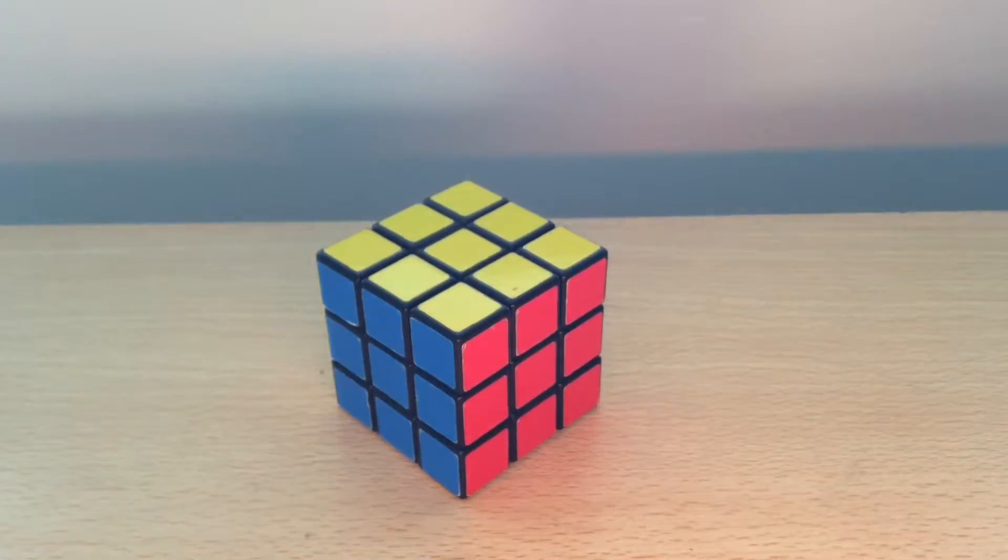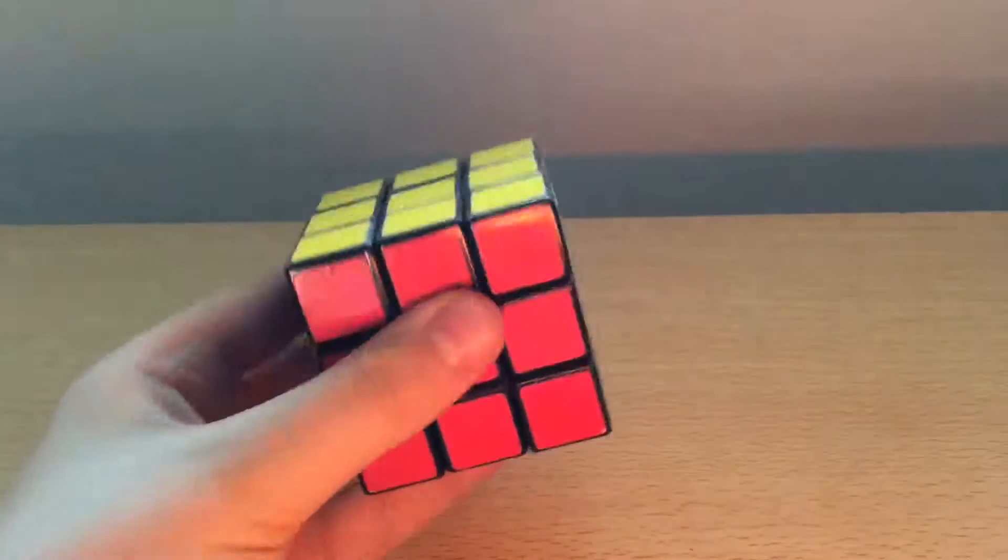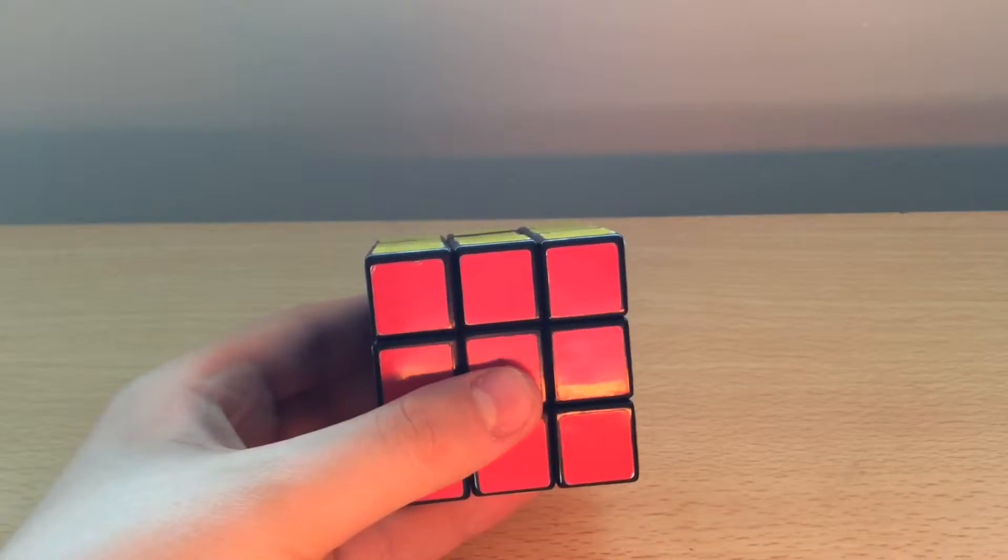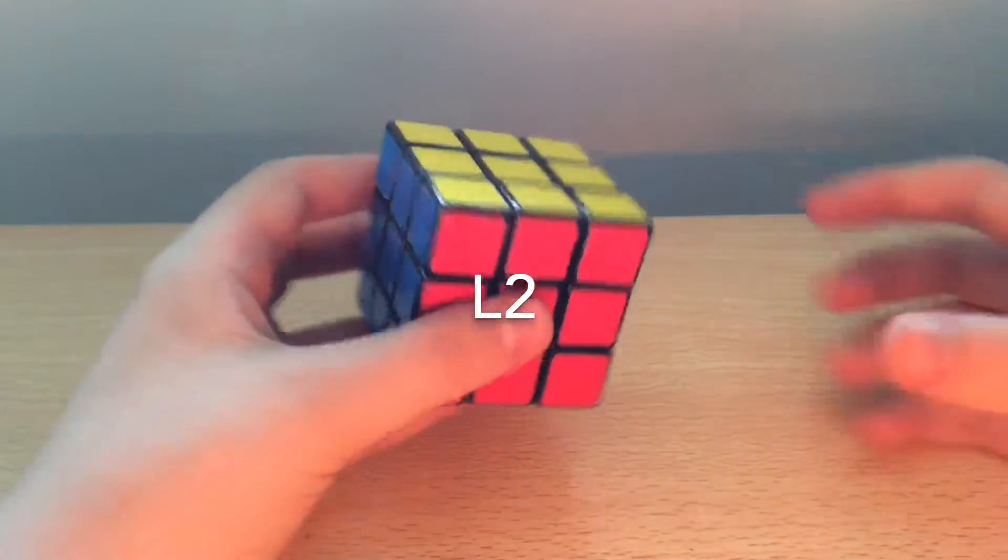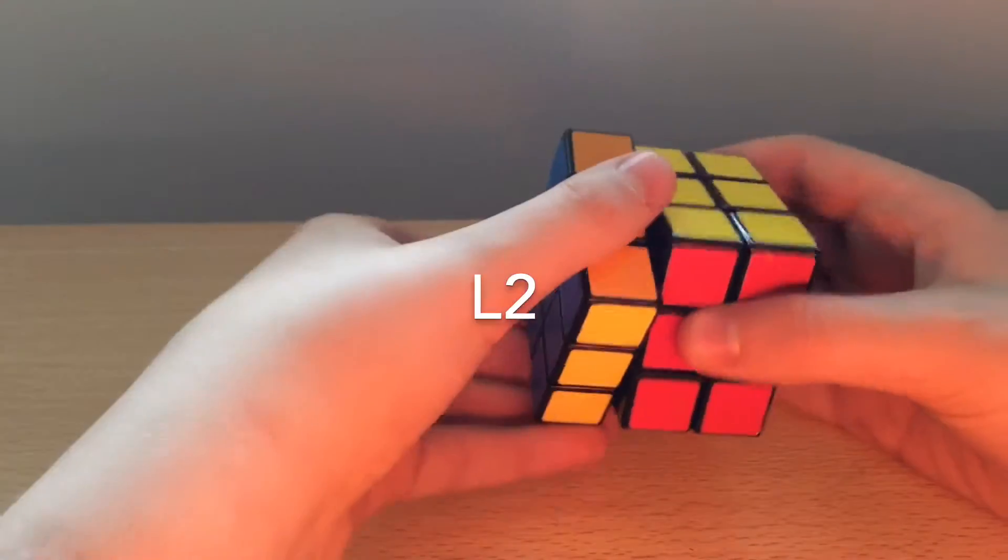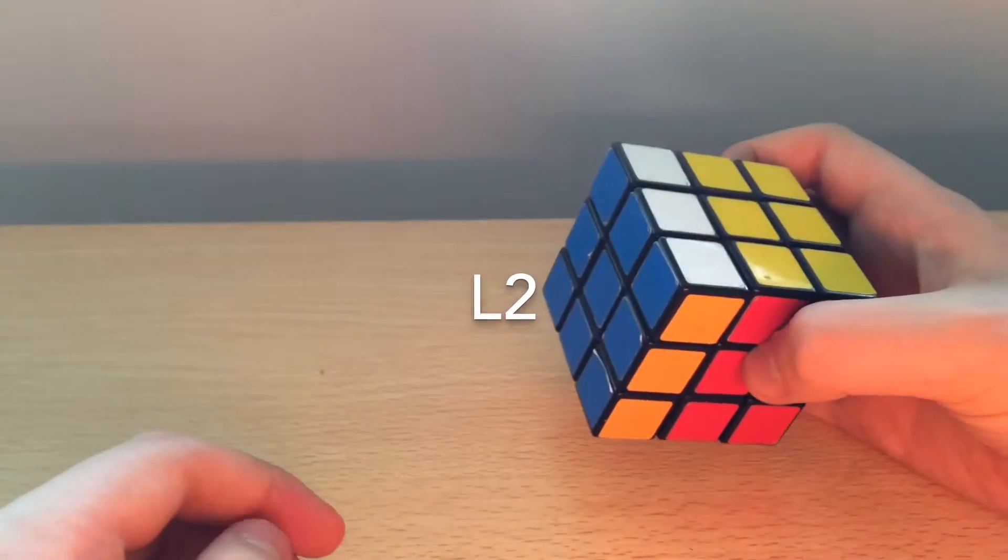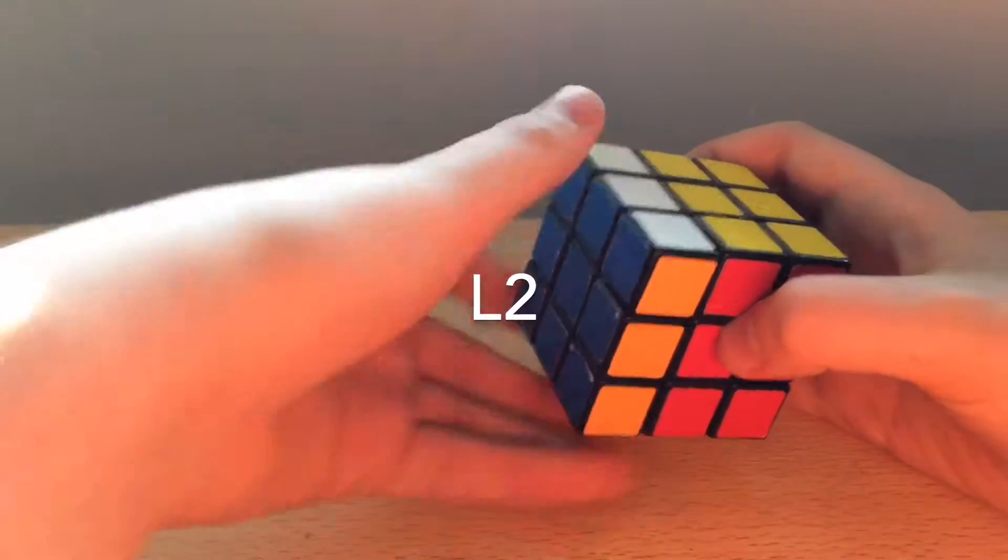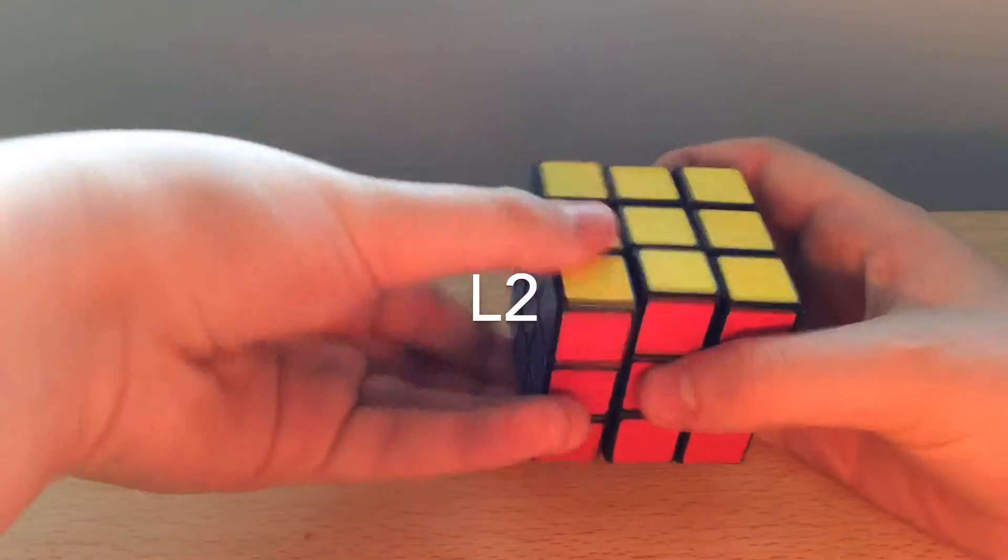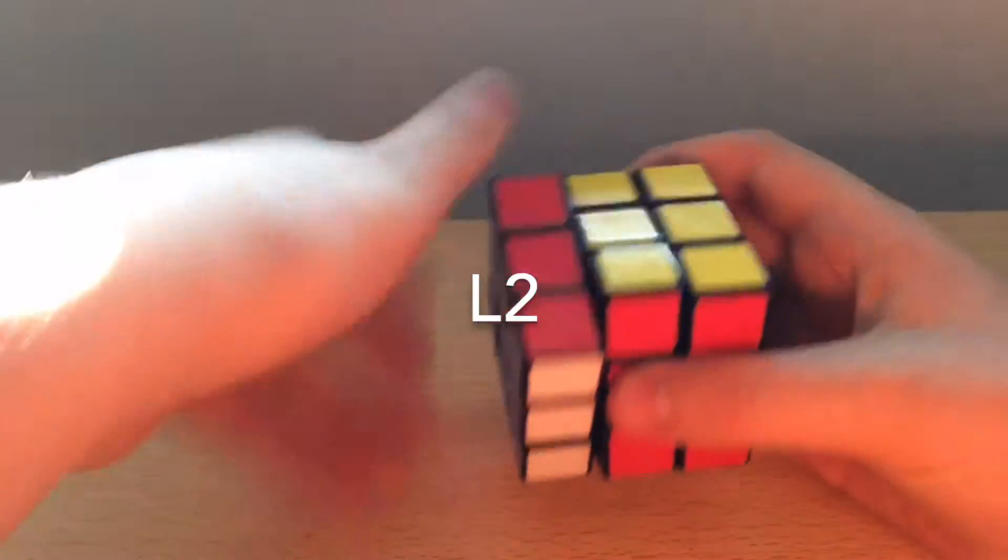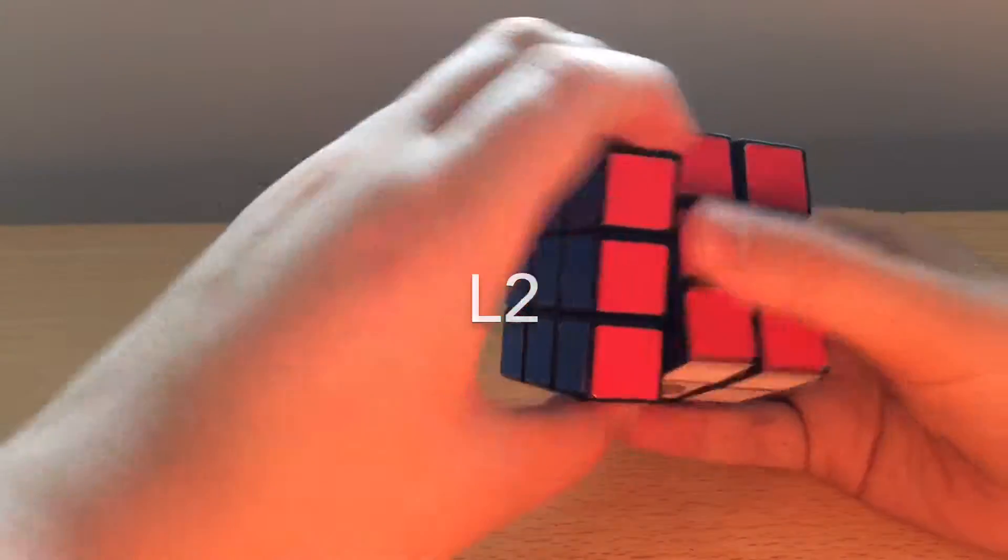As well as clockwise and anti-clockwise movements, we can also have two movements. So again holding the face like this, if we ask for the move L2, then we would move the L side twice. Now it doesn't matter which direction it's in, because if you go two clockwise it's the same as going two anti-clockwise. They make the same thing.